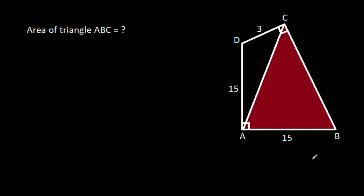In this video, we have been given that angle BAD is 90 degrees, angle BCD is 90 degrees, and AB is 15, AD is 15, CD is 3. Then we have to find the area of triangle ABC.